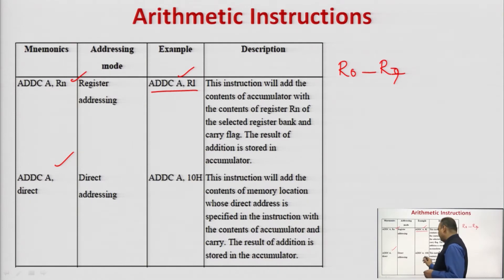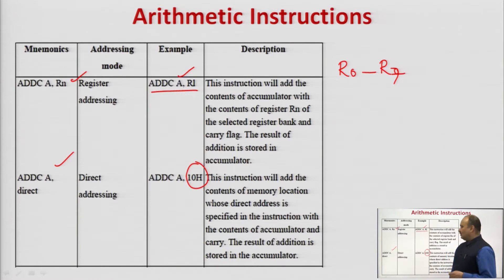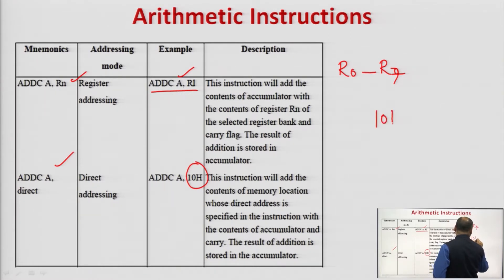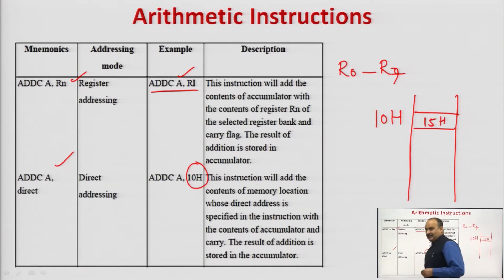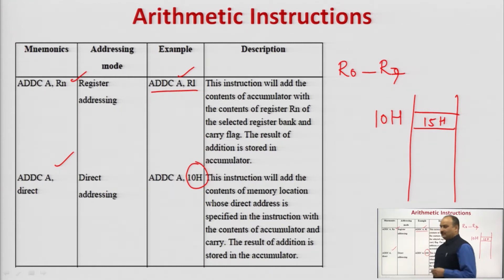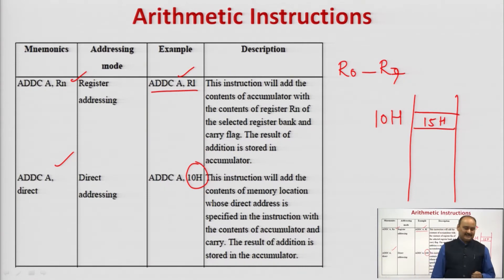Next is ADDC A, direct. Here, 10h is the direct address of the memory location specified with the instruction. Suppose the data at memory location 10h is 15h — this data is added with the content of the accumulator along with the carry flag, and the result is stored back into the accumulator. These are the various forms of the ADDC instruction.